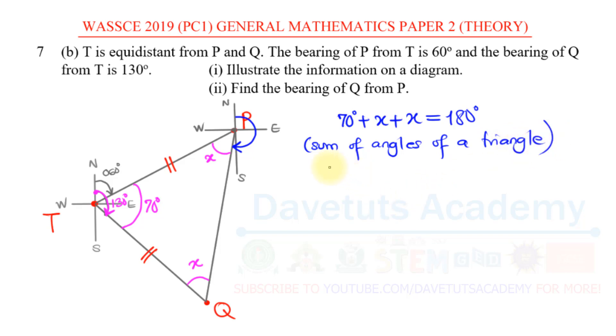So meaning that 2X is equal to 180 minus 70, and 180 minus 70 is 110 degrees, so that X will be 110 degrees over 2, and that will be 55 degrees.